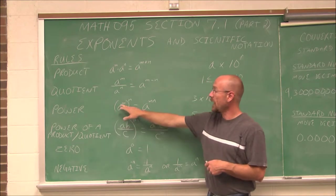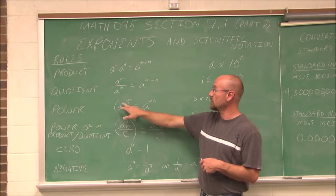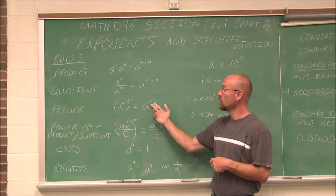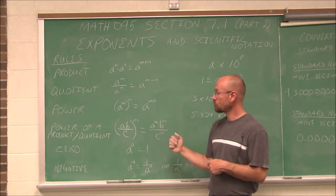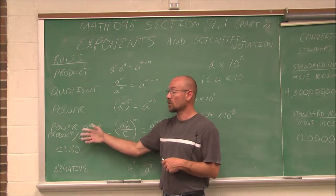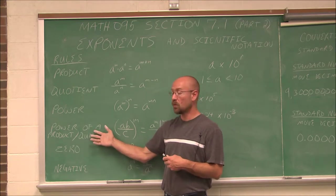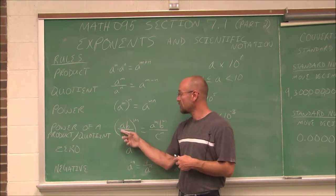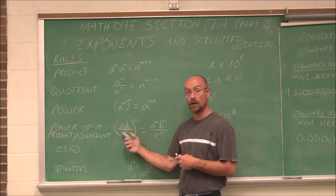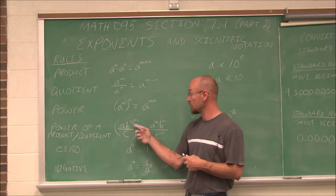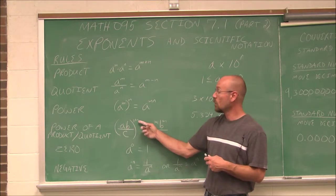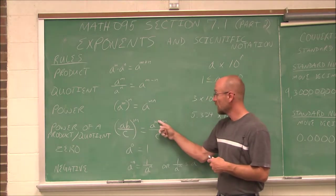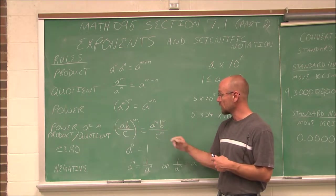For the power rule, if we have a base to a power raised to a power — an exponent raised to an exponent — we can simply multiply them. For the power of a product or the power of a quotient, if we have a product or a quotient or a combination raised to a power, we distribute the power to each thing within those parentheses.